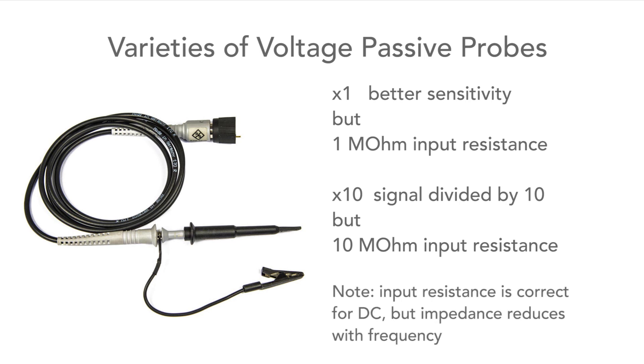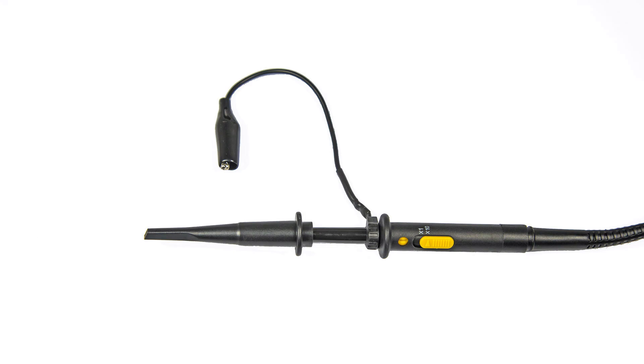It's times ten because it has ten times the input resistance and therefore it will affect the circuit being tested much less. Often a single probe may be switchable between times one and times ten, letting you choose between sensitivity and loading the circuit.